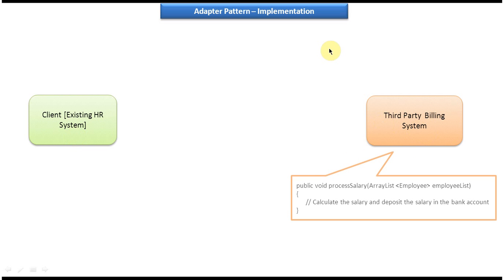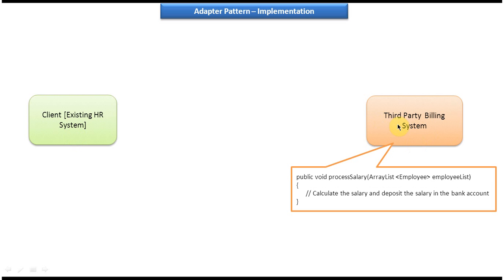First I will explain the scenario where we can use the Adapter Design Pattern. On the right side you can see a third-party billing system, and on the left side you can see the existing HR system which is the client. Both these systems are incompatible systems. We will see now how they are incompatible. The third-party billing system has one method called process salary and the parameter is ArrayList of Employee.